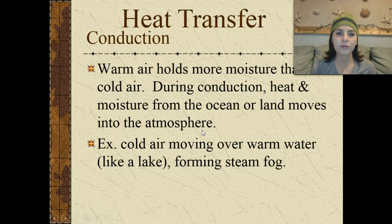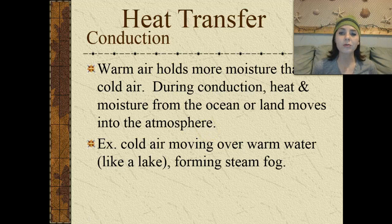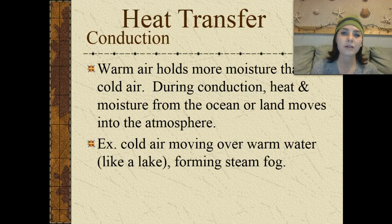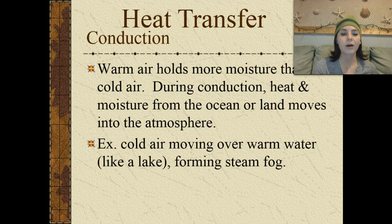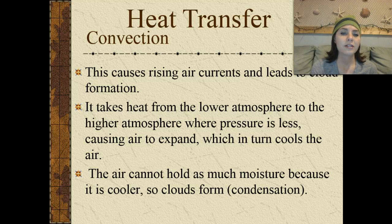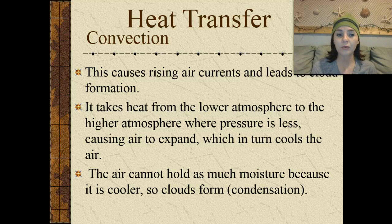We have a heat transfer through the way of conduction. This is when warm air holds more moisture than cold air, and during conduction, heat and moisture from the ocean or land moves into the atmosphere. For example, cold air moving over warm water, like a lake, starts to form a steamy type of fog. When this causes rising air currents, it leads to cloud formation.